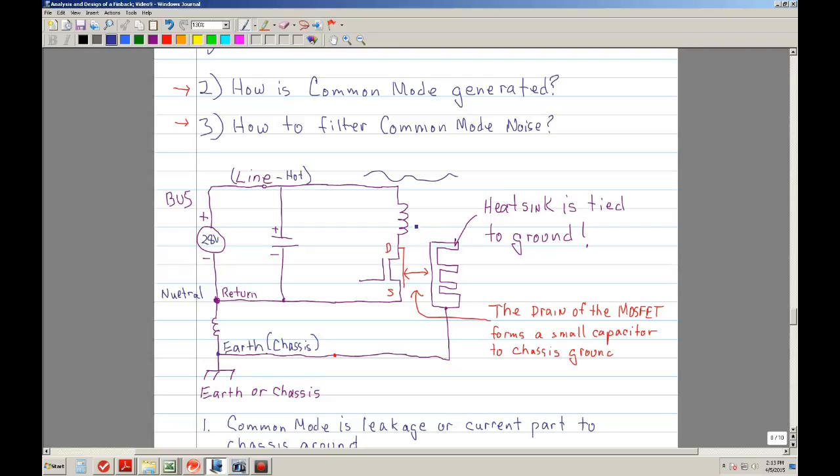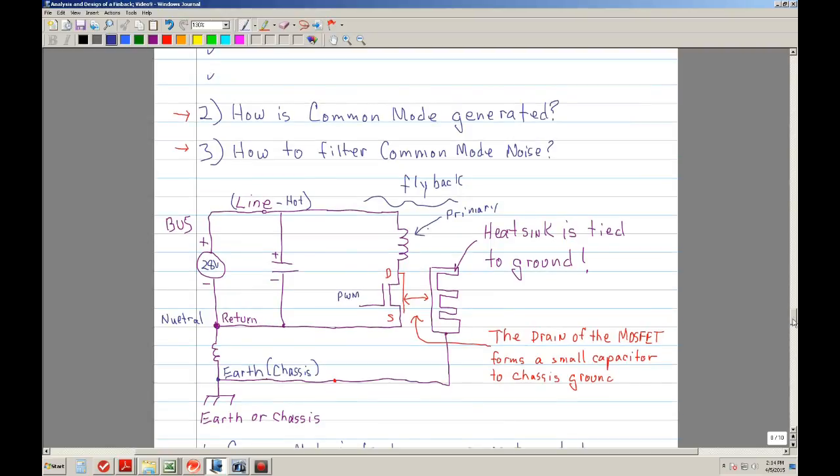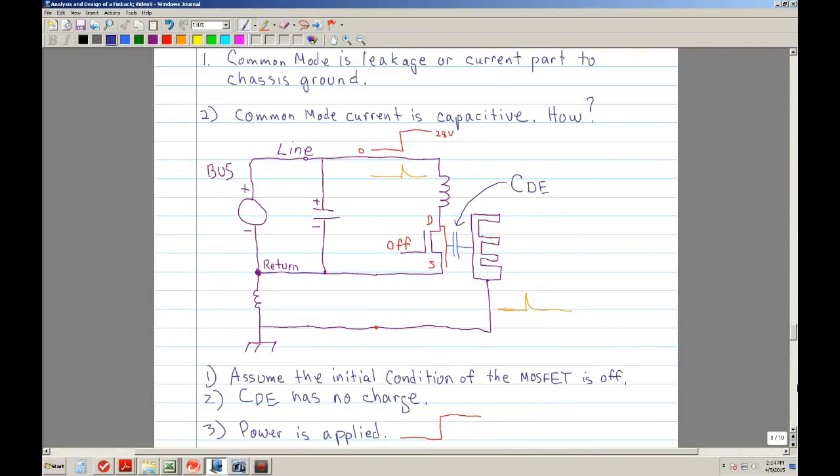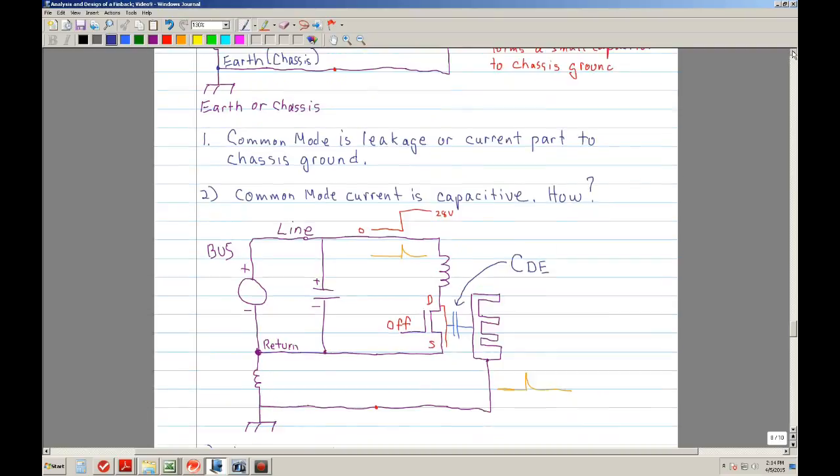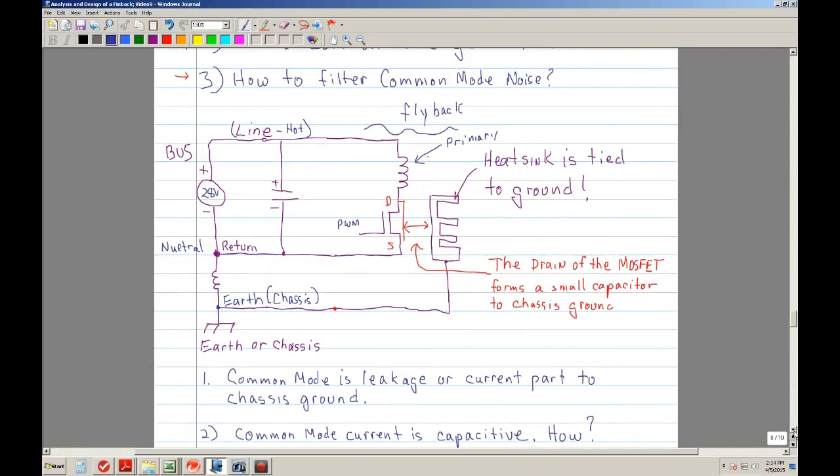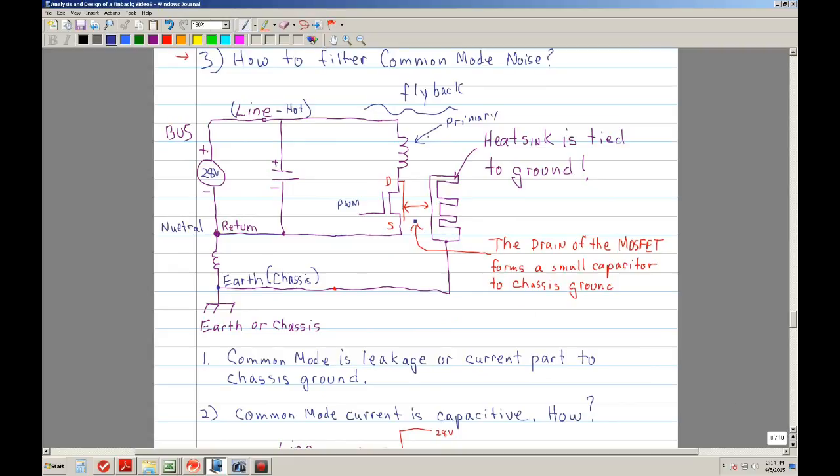So this is your bus or could be your input filter as well. And this side will be a very simplified flyback. And primarily, you're going to have a transformer. And I'm not showing, I'm just showing the primary side, just to simplify it. And you're going to have a MOSFET. And of course, the MOSFET is controlled by the PWM.